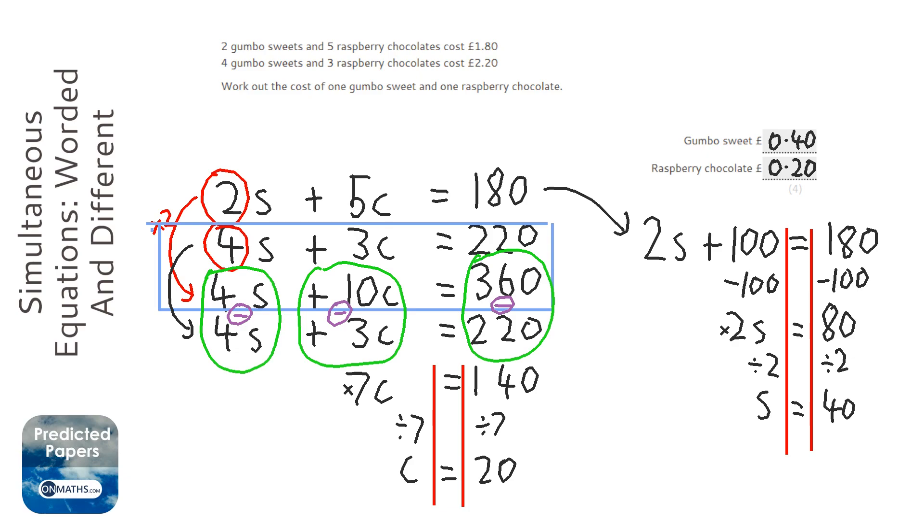Now you can check this by putting both of these numbers into the second equation and check that it works. So 4 times S, which would be 4 times 40, is £1.60, plus 3 times C, which is 60p. Add the two together and you get £2.20.